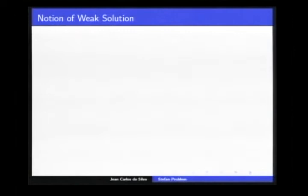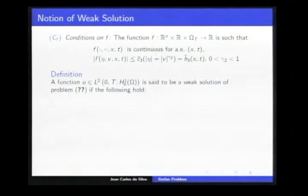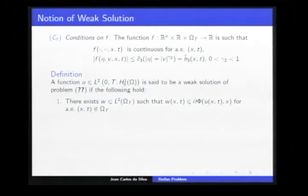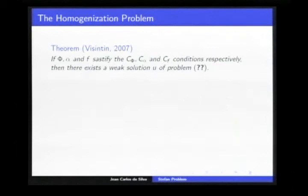We also need a notion of weak solution; the condition on our function f is similar to alpha. This notion of weak solution is formulated in the framework of Sobolev spaces. A function is said to be a weak solution of our problem if there exists a function in the space L2 that belongs to the differential of the convex function, and it must satisfy the differential part in the sense of distributions.